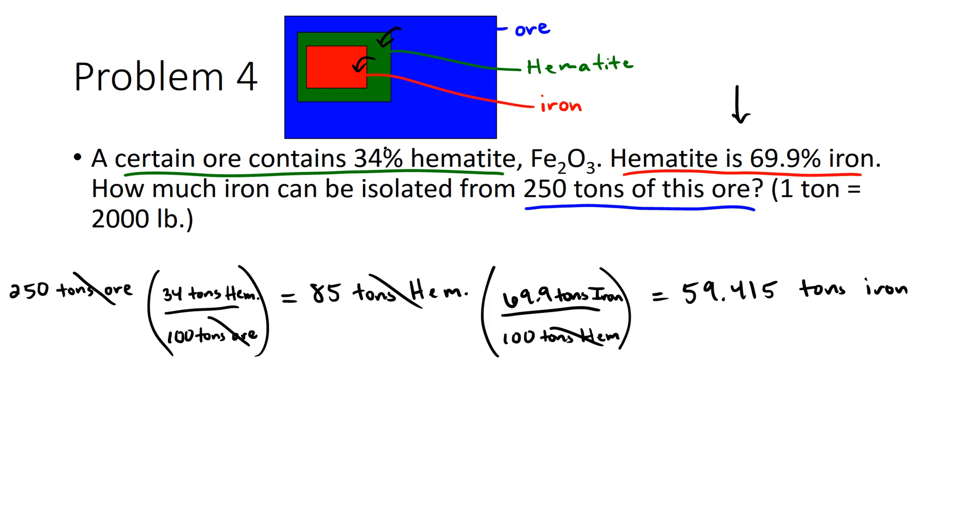34 percent is two sig figs, 69.9 is three sig figs, 250 tons is two sig figs. So you always want to go with the lowest number of sig figs, which is two.